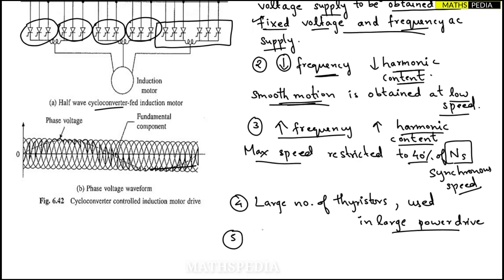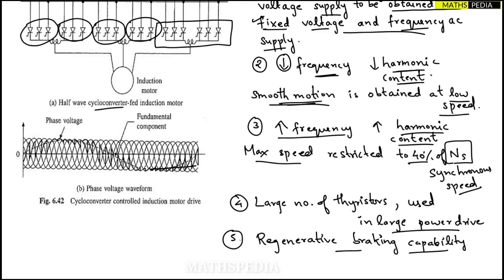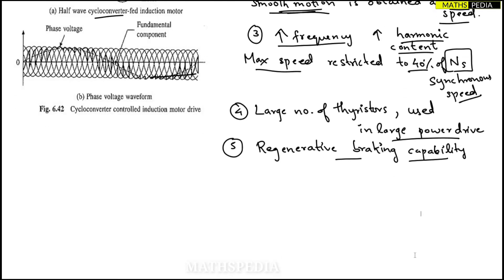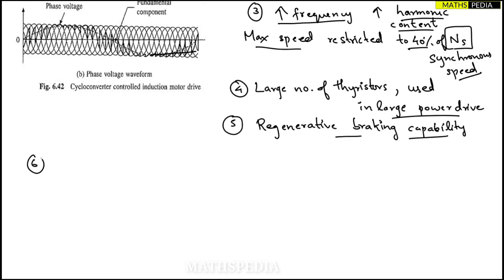The fifth point is that this drive has regenerative braking capability. This is one important advantage of the cycloconverter controlled induction motor drive.